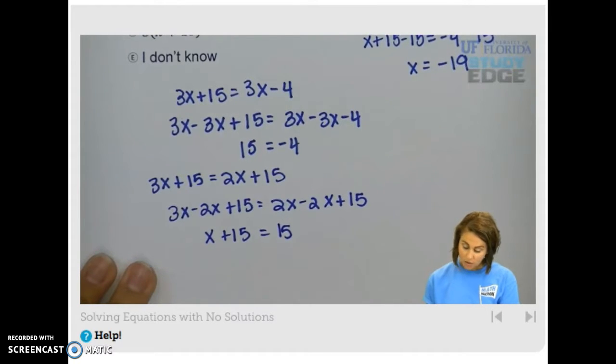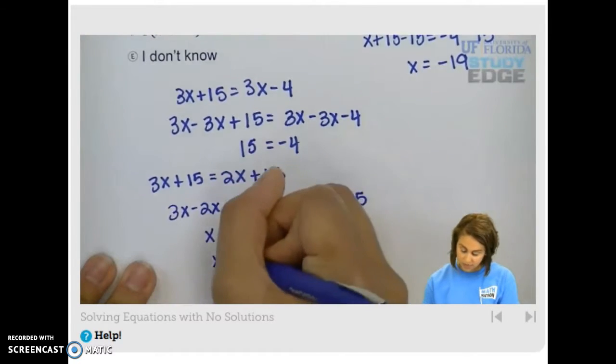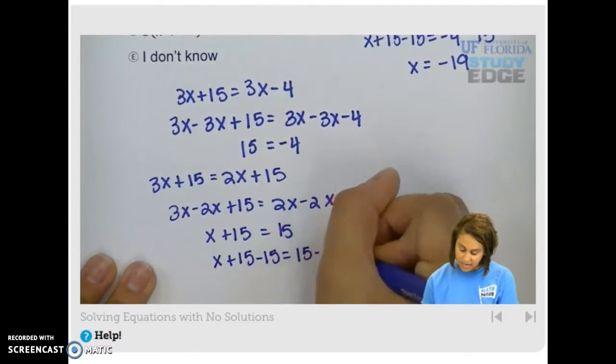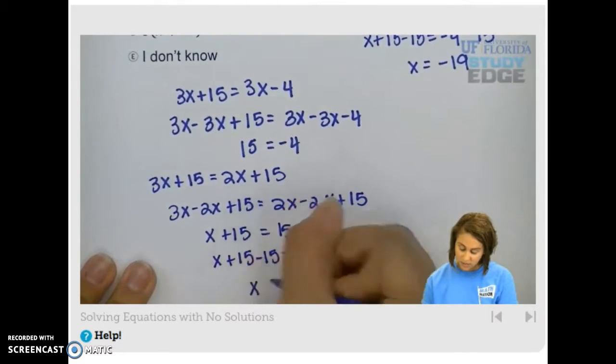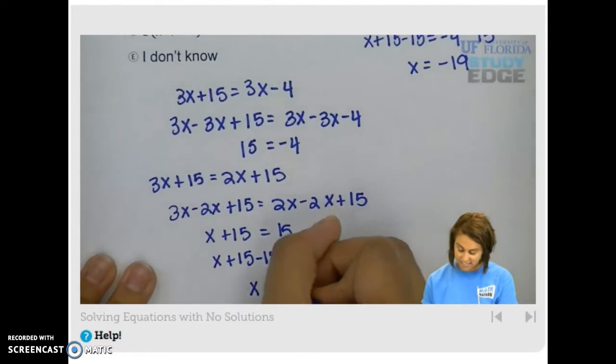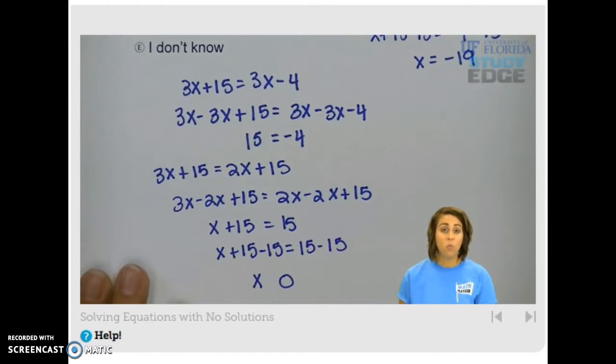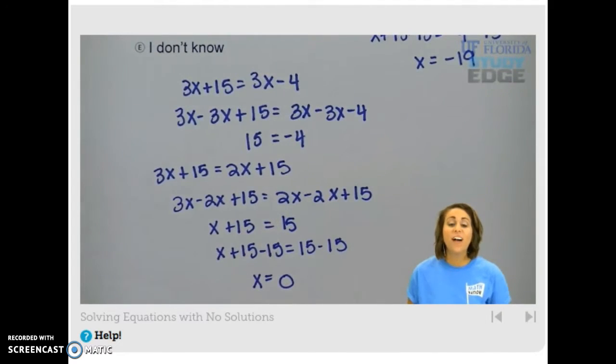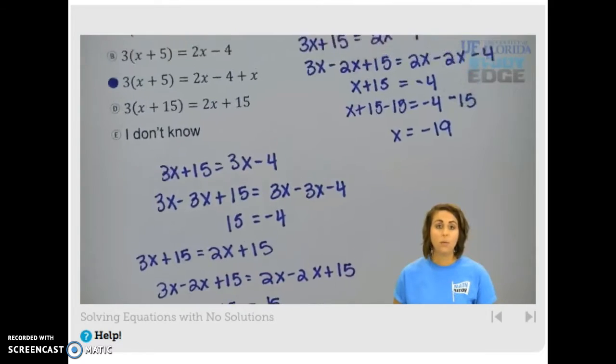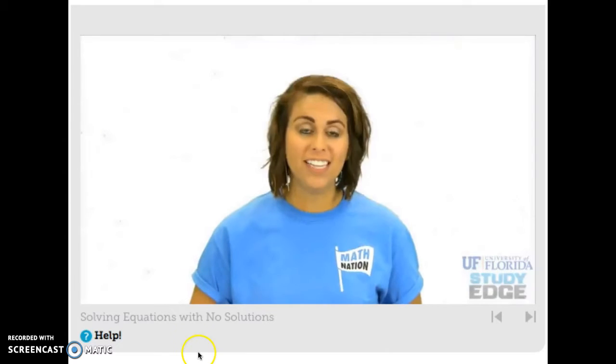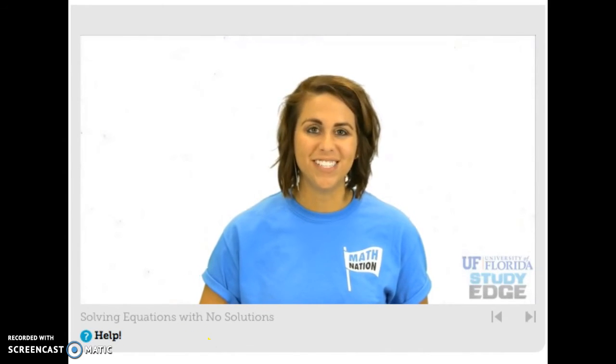Well, now we want to subtract 15 from both sides. So when we do that, we have 15 minus 15 and 15 minus 15 which gives us x on the left and 0 on the right. So we have one solution here and so we don't have no solutions which is what we were looking for and what we found in choice c. Good job solving these and identifying which one had no solutions.